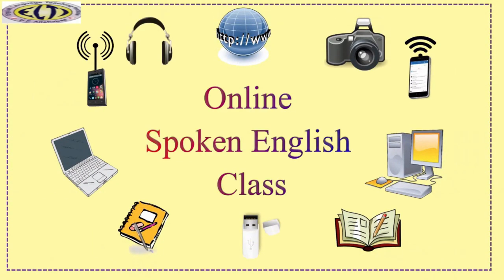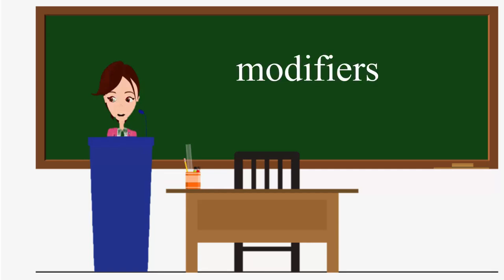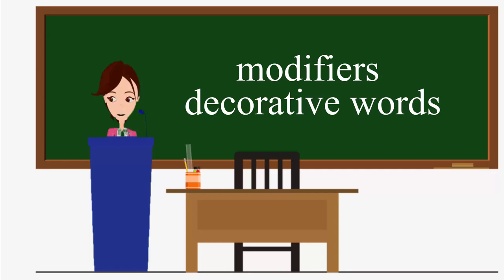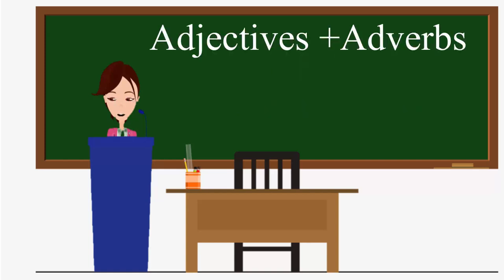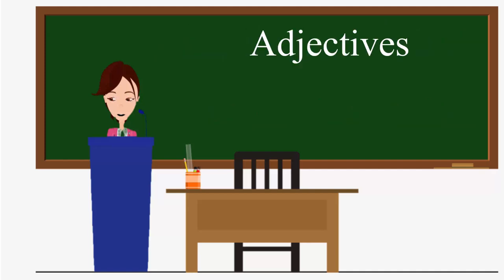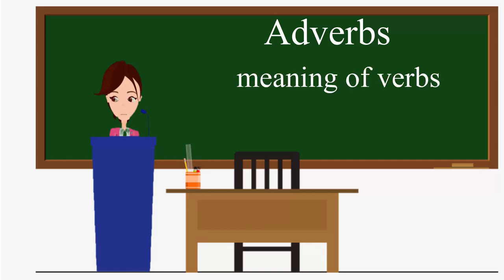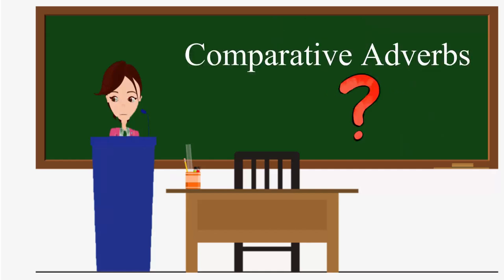Hello friends, welcome back to online spoken English class. As we have learned in the previous modules, adjectives and adverbs are the modifiers or the decorative words. Adjectives and adverbs have two things in common: they both modify another word, and they both show degree of comparison. Adjectives modify a noun or pronoun, whereas adverbs modify the meaning of verbs, adjectives, and other adverbs. But what are comparative adverbs, and when do we use them?